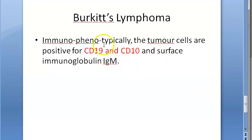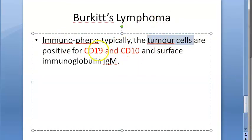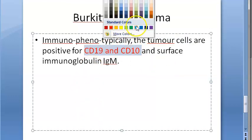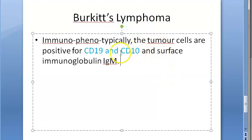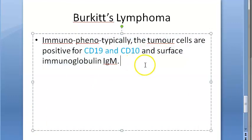If you immunophenotype Burkitt's lymphoma, the tumor cells will be positive for CD19 and CD10. And there will also be surface immunoglobulin IgM. These are very specific points you should know.